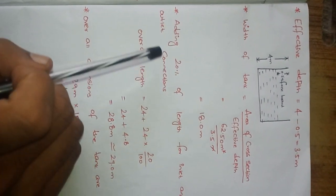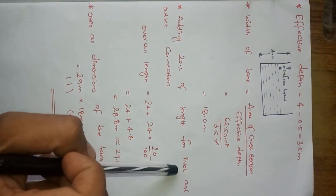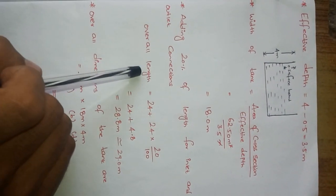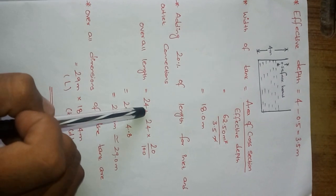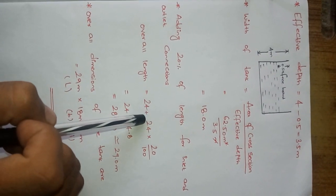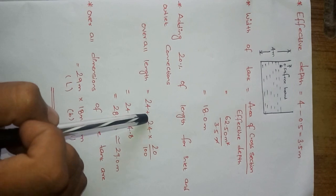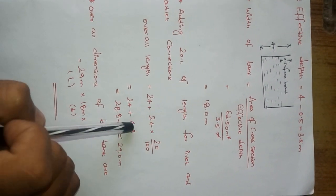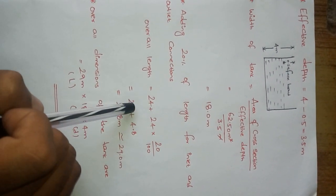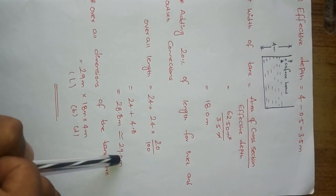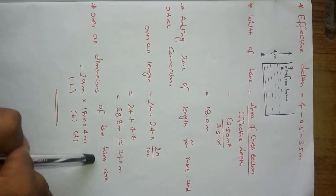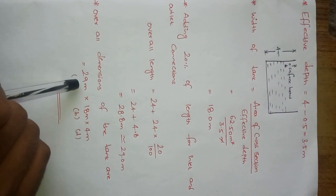Next point is adding 20% of length for inlet and outlet connection. Overall length equals 24 plus 20% of 24. Length we have got is 24 meters. 20% is 24 × 20 by 100, which is 4.8. This length of 24 meters plus 4.8 gives us total 28.8, approximately 29 meters.